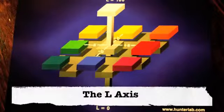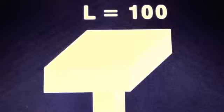The L-axis is a measure of the lightness of your product. On the L-axis, L equals 0 is total absorption, whereas pure white would equal 100.